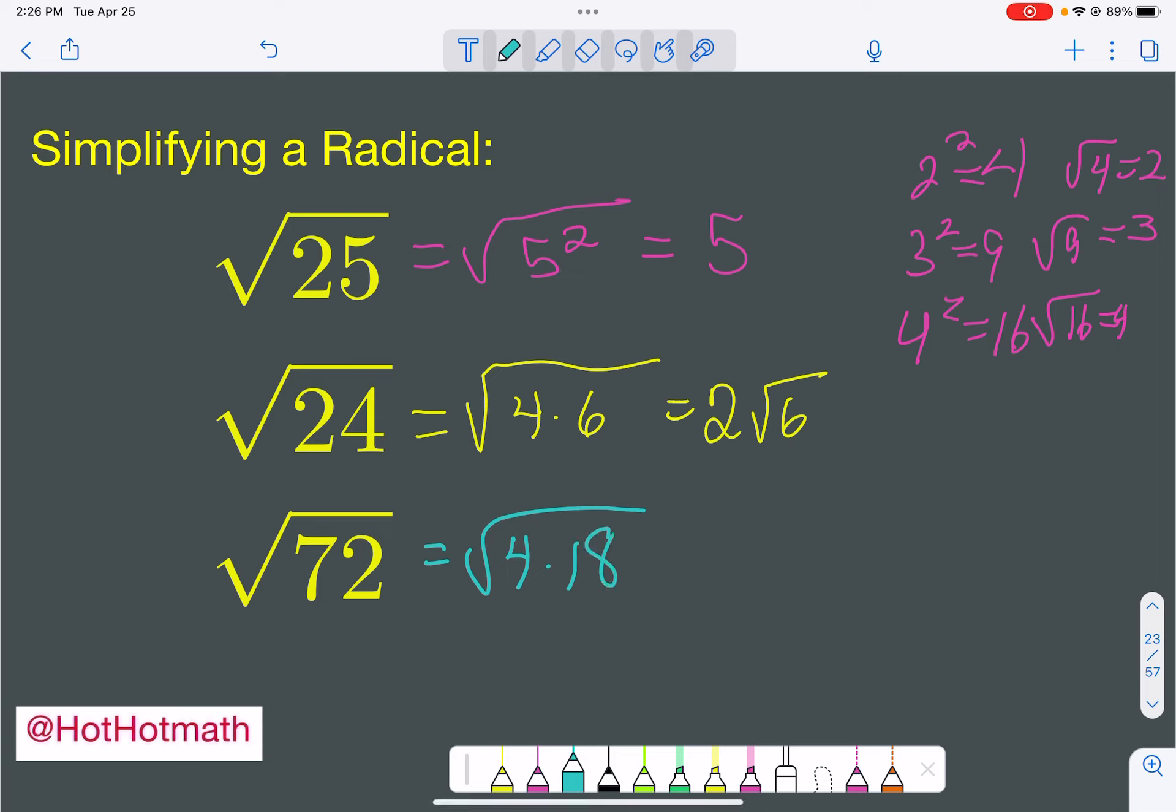Now, why is that helpful? Well, 4 is on our list. It's a perfect square. But there's something in the number 18 that's also on this list. That would be 9. So let's break it down one more time. That's going to be 4 times 9 times 2.